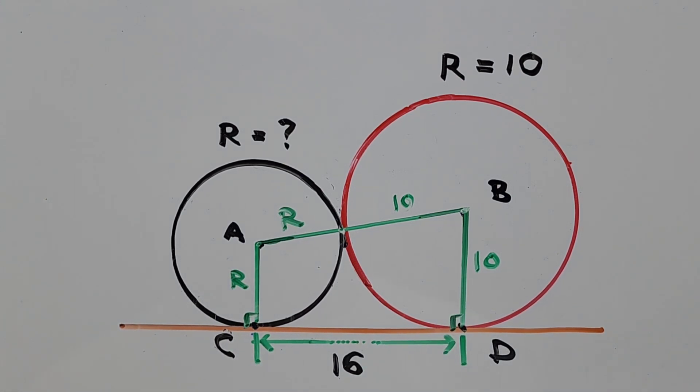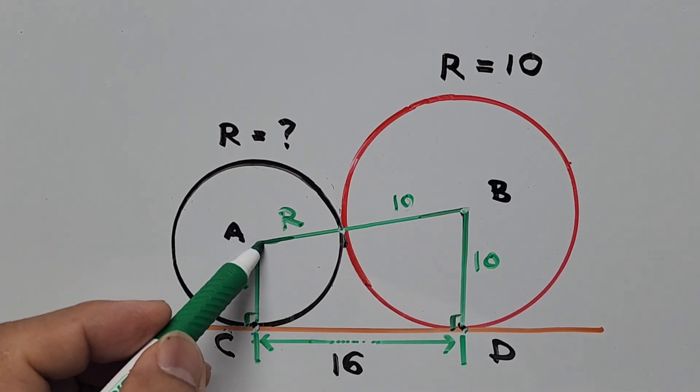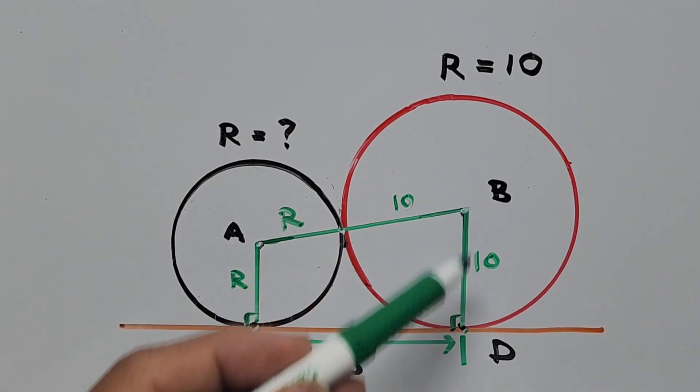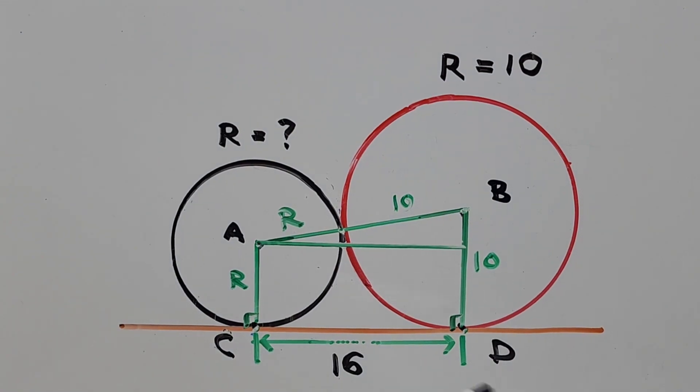Next, we construct a line parallel to CD from point A towards segment BD. Now let's designate this point as point E.